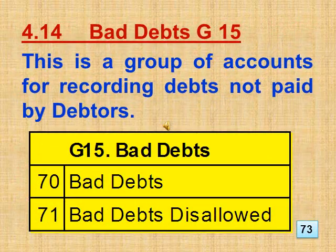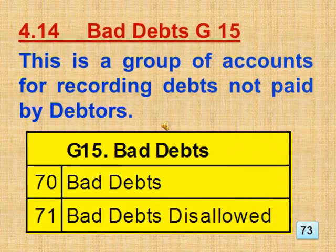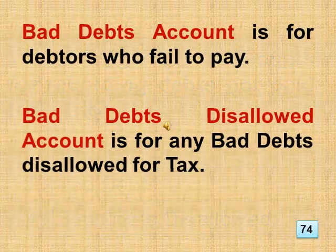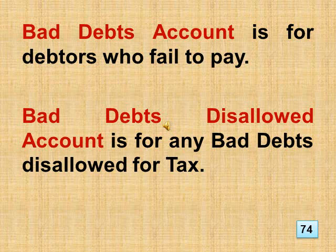Section 4.14 Bad Debts, Group 15. This is a group of accounts for recording debts not paid by debtors. This includes bad debts and the bad debts disallowed accounts. Bad debts account covers debtors who fail to pay. Bad debts disallowed account covers any bad debts disallowed for tax.